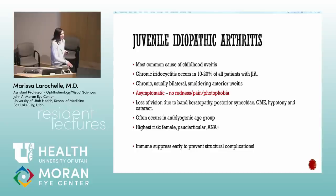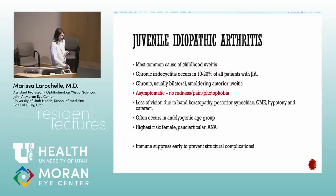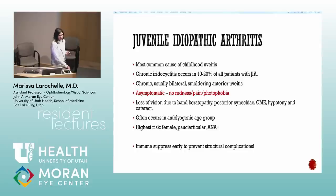JIA uveitis is often bilateral, chronic, and smoldering — it goes undiagnosed for a long time because kids don't know to complain about vision. They lose vision from structural complications like CME, cataracts, and glaucoma. Highest risk is in young females who are ANA-positive with pauciarticular disease — pauciarticular is the same as oligoarticular. Immunosuppress early to prevent structural complications; studies show JIA patients referred early to a tertiary center for immunosuppression have decreased visual loss and structural complications.